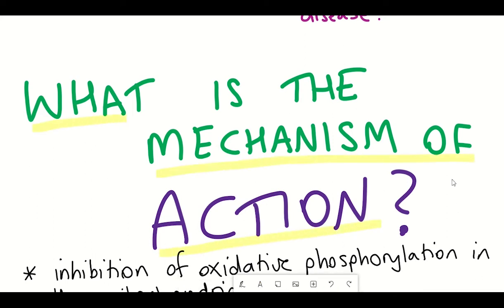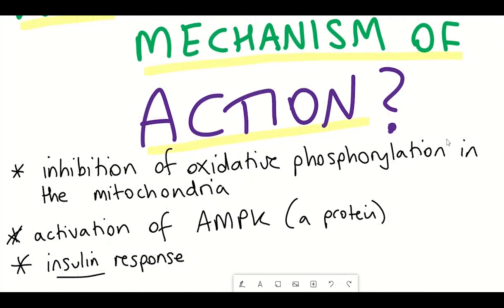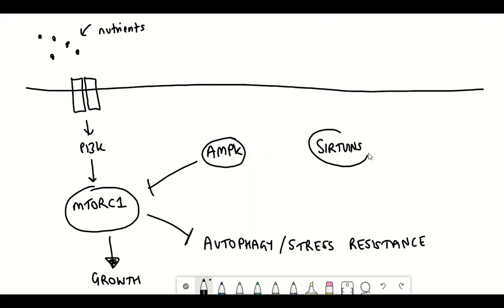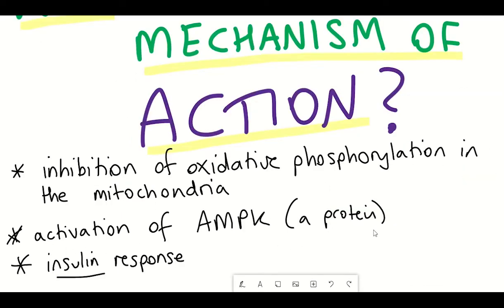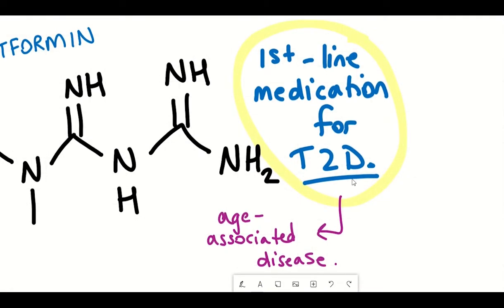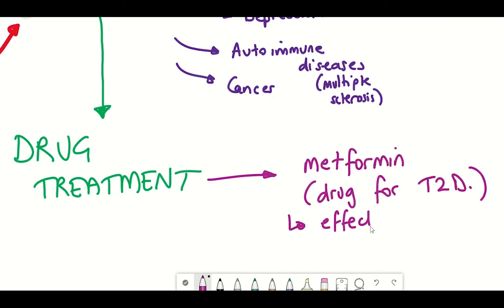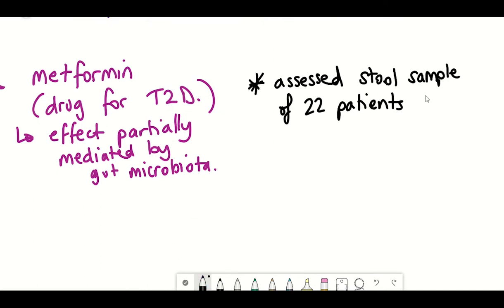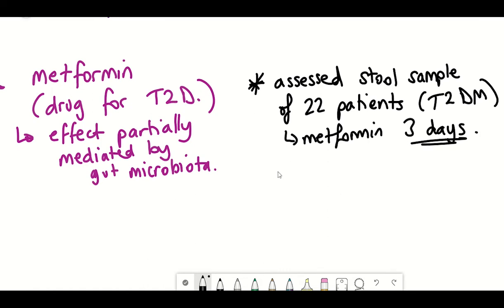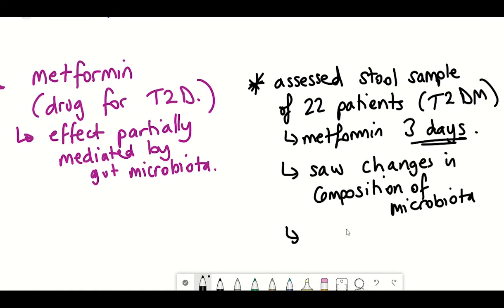Some of these mechanisms include inhibition of oxidative phosphorylation within the mitochondria, and activation of AMPK, which as you can see in this diagram is thought to also help activate sirtuins and suppress growth signaling pathways within a cell. It also impinges on insulin signaling, which explains its efficacy as a type 2 diabetes treatment. Even more recent studies show that metformin can have significant effects on the gut microbiome, altering its composition in ways that also mediate the beneficial outcomes of metformin in type 2 diabetes management.